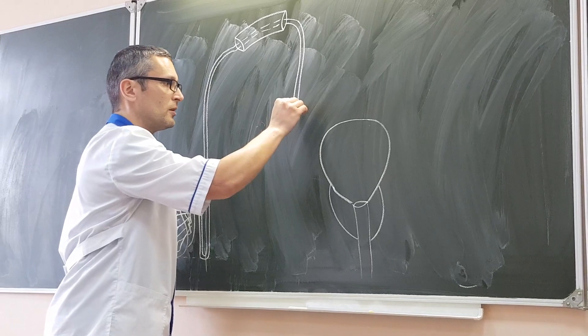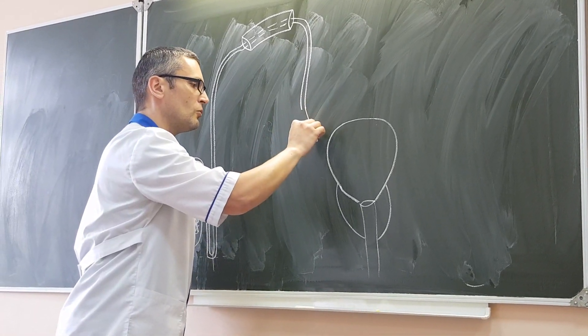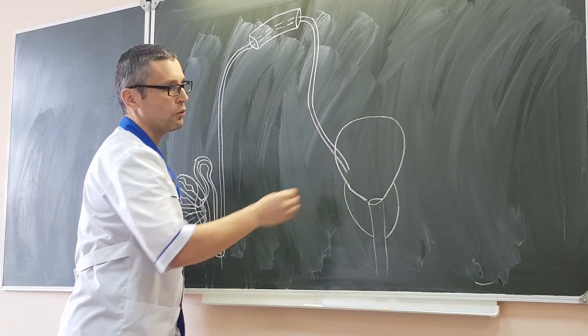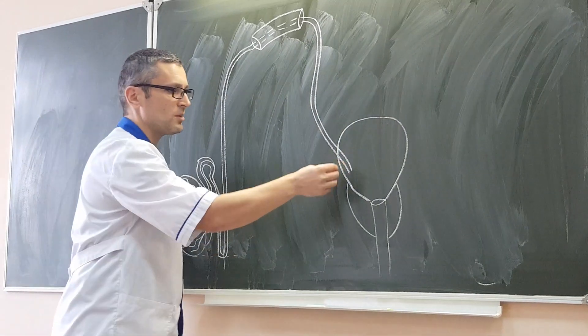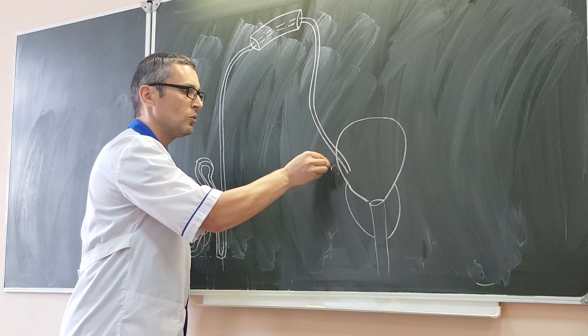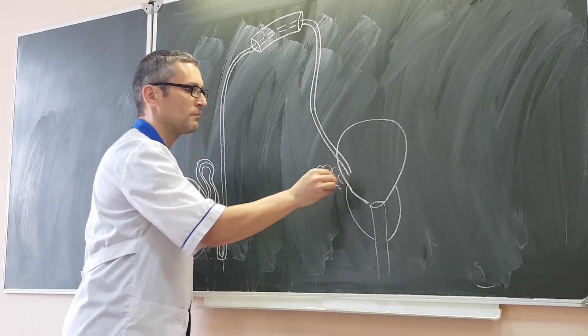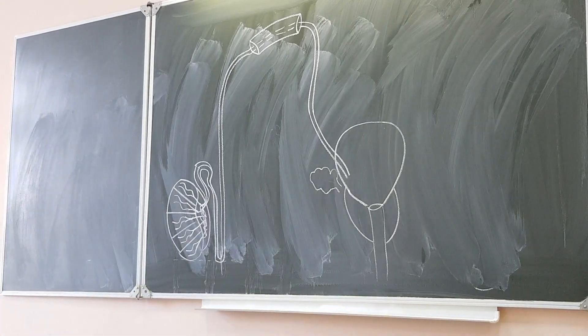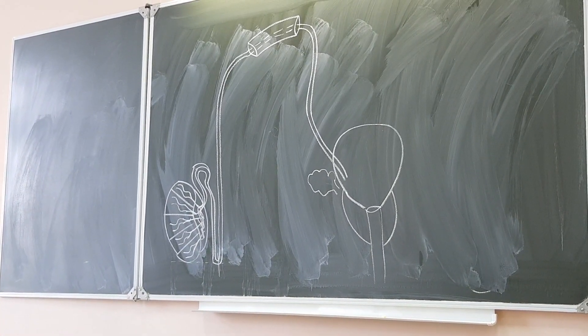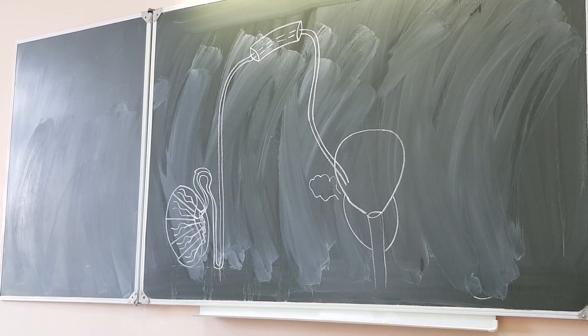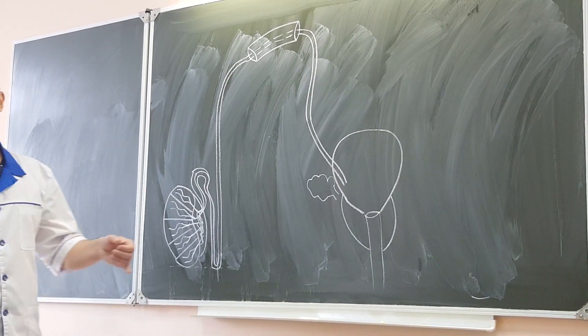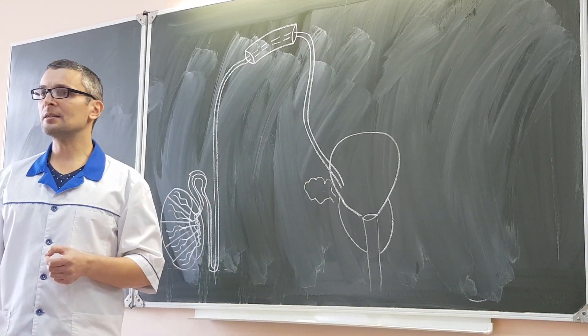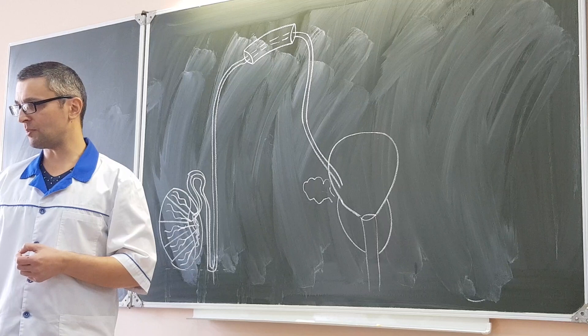And ductus deferens comes closer to the bladder, to its lower part. And here, on the posterior side of the bladder, we can meet seminal vesicle. This seminal vesicle is very important. Seminal vesicle produces the liquid part of the sperm. Approximately 60% of all fluid of sperm is secreted by this seminal vesicle.